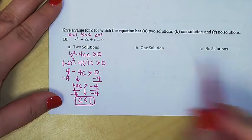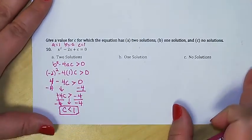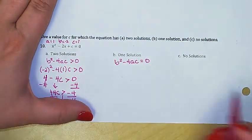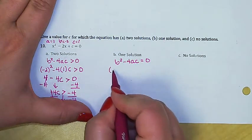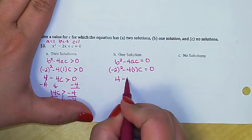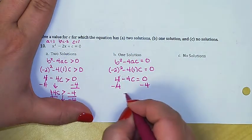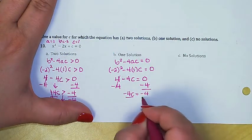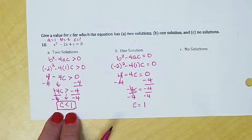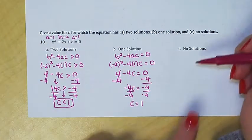For exactly one solution, we want the discriminant to equal exactly zero instead of being greater than zero. Going through the same steps with the same values, we get 4 − 4c = 0, and solving gives c = 1. So if c is less than one, two solutions; if c is exactly one, one solution.